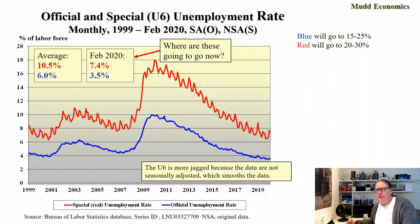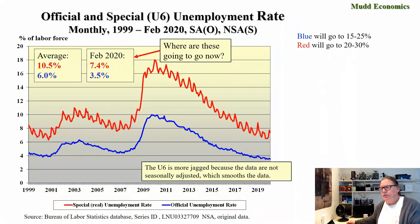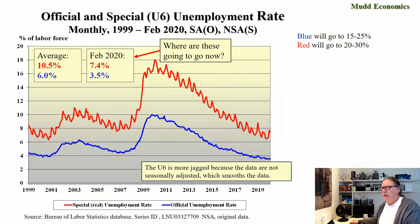In my opinion, it should be called the real unemployment rate, because these people are just as unemployed as those who actively sought work in the last four weeks. When you map the two out, going back from 1999 to the present, the red upper line is the U6 rate and the blue is the standard. Over this time span, the U6 has averaged 10.5%, while the standard has averaged 6%. Both are relatively low in February 2020 — the U6 at 7.4% and the traditional rate at 3.5%. The question is, of course, where are these going now?